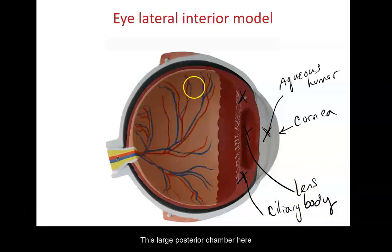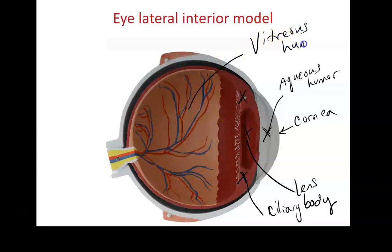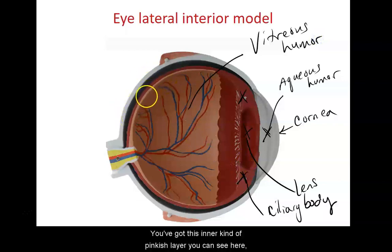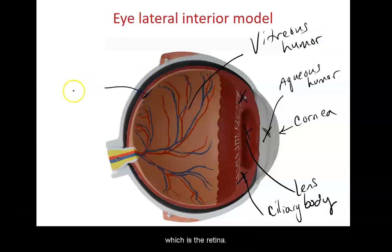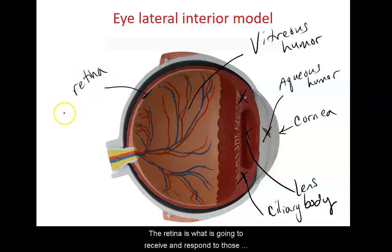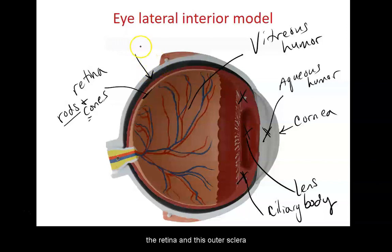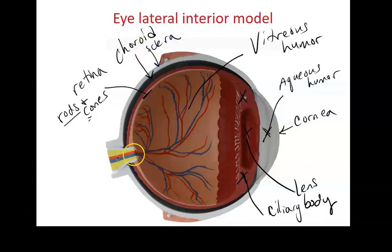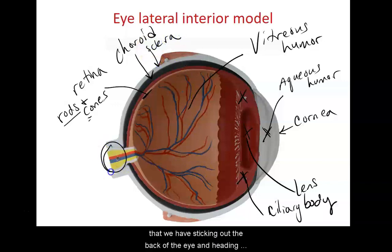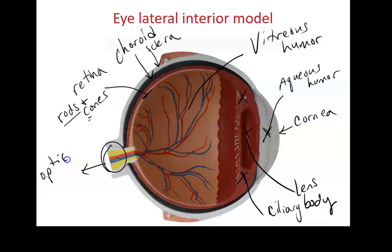This large posterior chamber is filled with a thicker fluid called the vitreous humor, which looks almost jelly-like. The eye has three main layers: the inner pinkish layer is the retina, which receives and responds to light waves using rods and cones — cones for color, rods for light and dark. The middle layer between the retina and the outer sclera is the choroid layer, and the outer layer is the sclera. In the back, the optic nerve sticks out from the eye.